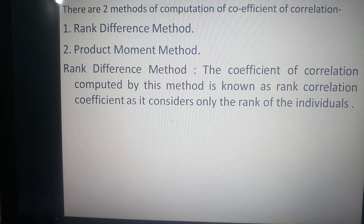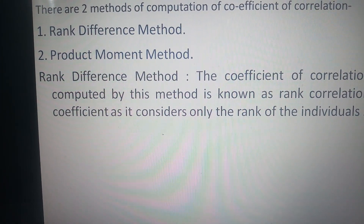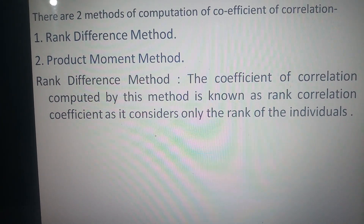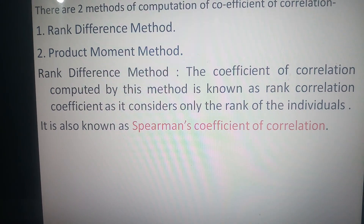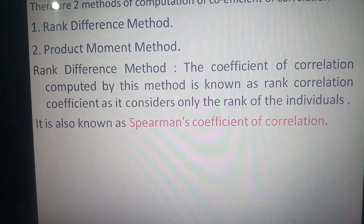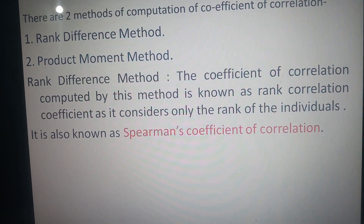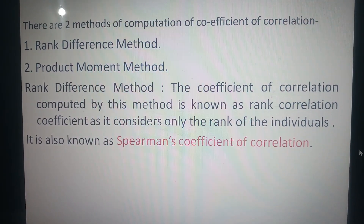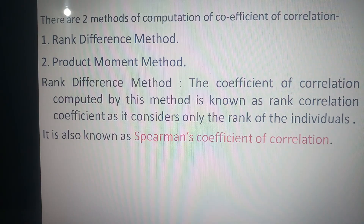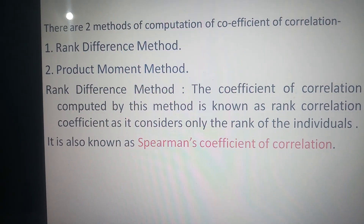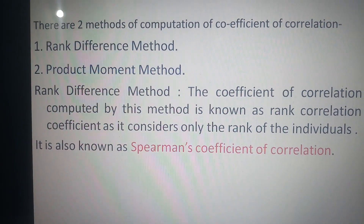The coefficient of correlation computed by the rank difference method is known as the rank correlation coefficient, as it considers only the rank of the individual. It is popularly known as Spearman's coefficient of correlation because this method was developed by Spearman, a psychologist from England. Today I am going to discuss how to find out the coefficient of correlation using the rank difference method.